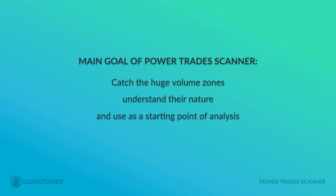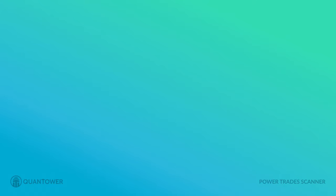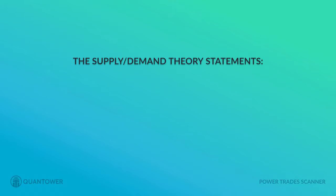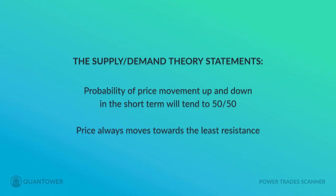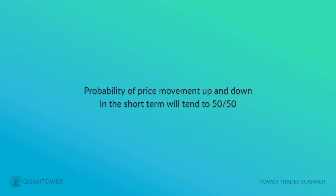Before we go ahead, we need to clarify a couple of basic points. As you can see on the slide, there are two important statements. The first statement is that the probability of price movement up and down in the short term will tend to be 50/50. The second statement is that the price always moves towards the least resistance. Keeping these two statements in mind, let's think deeply about probability and clarify why it's 50/50.